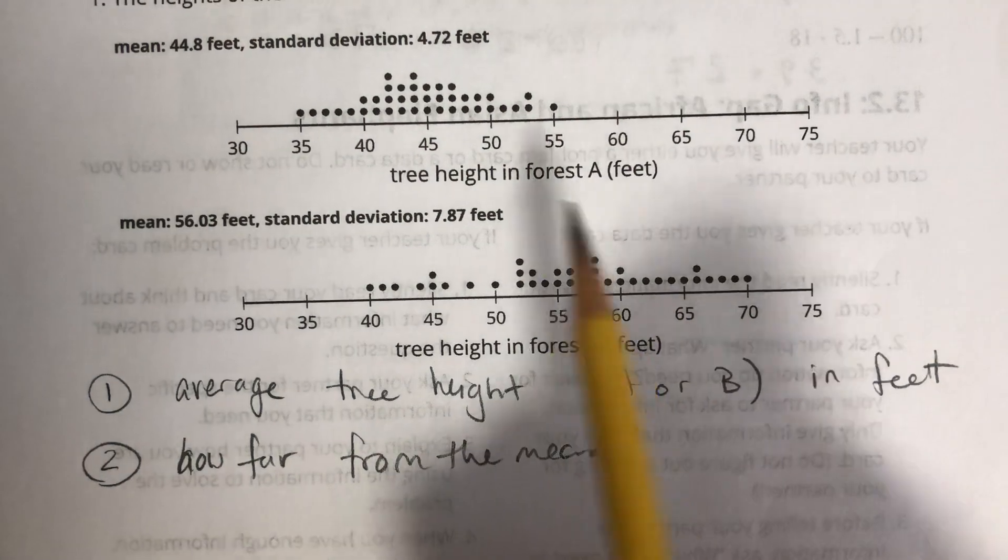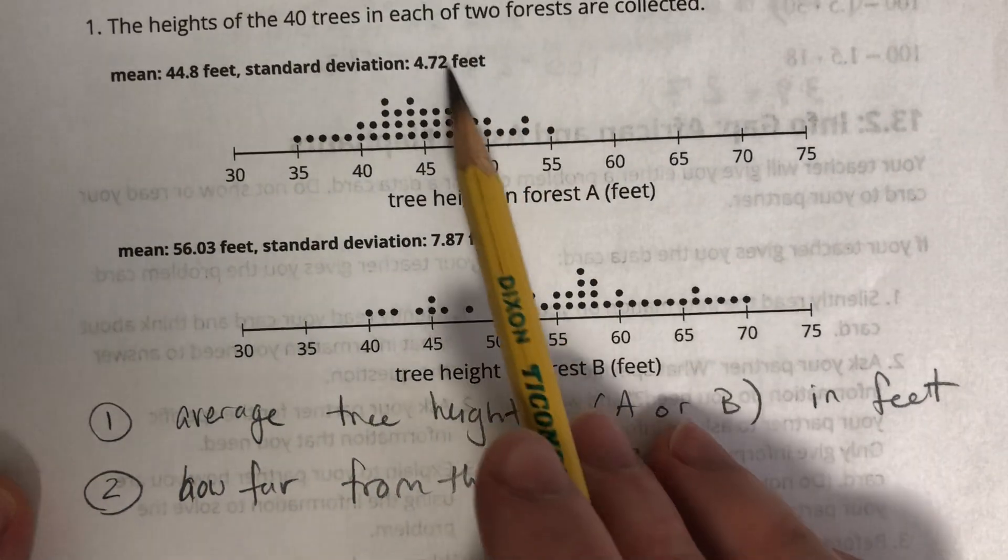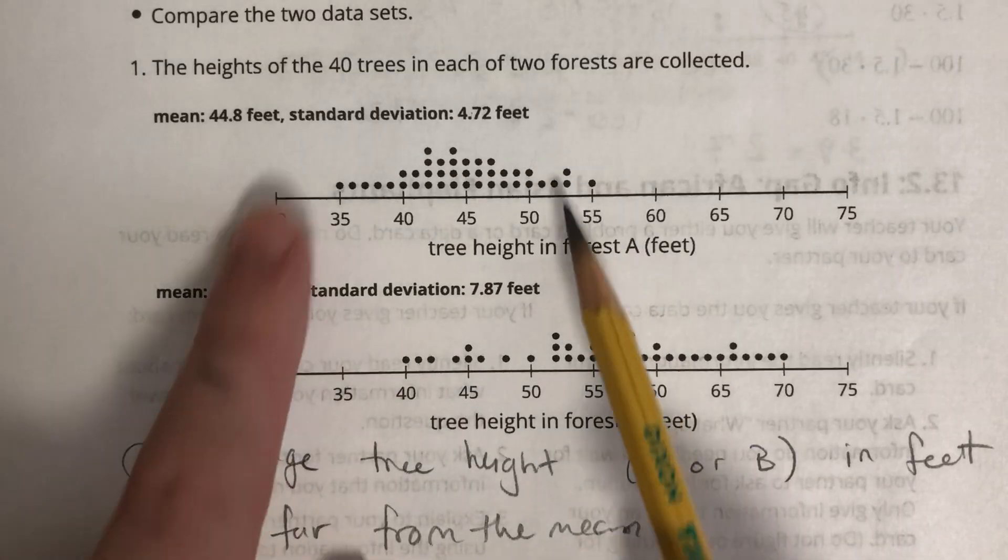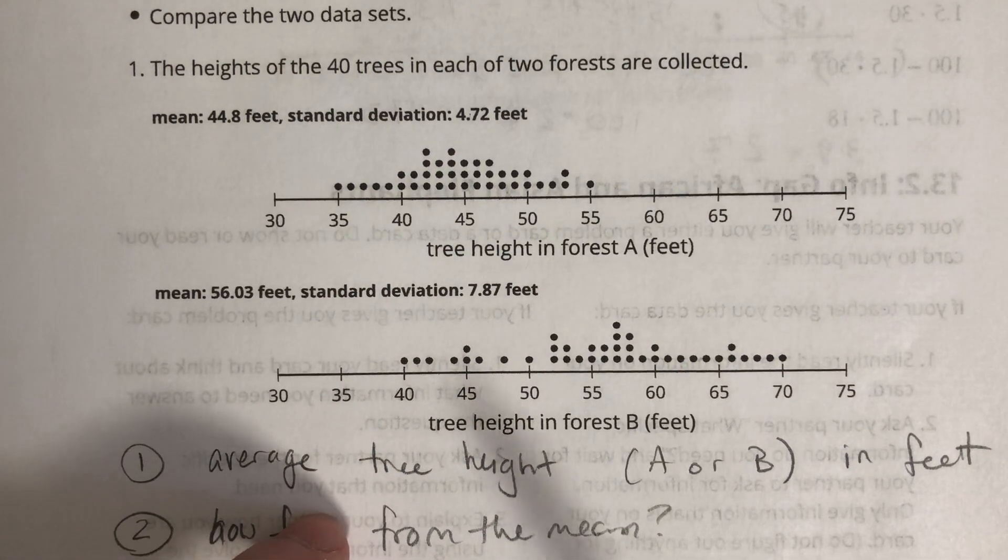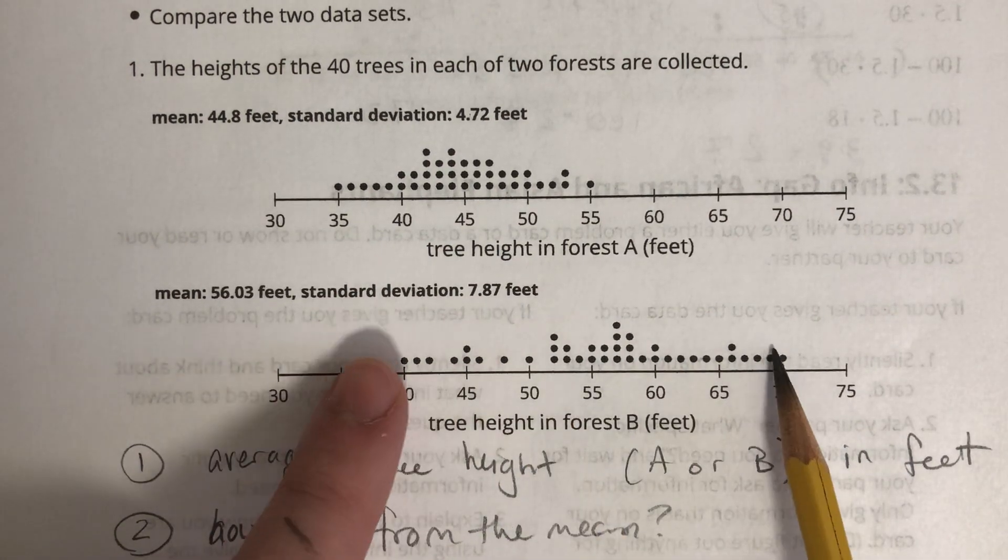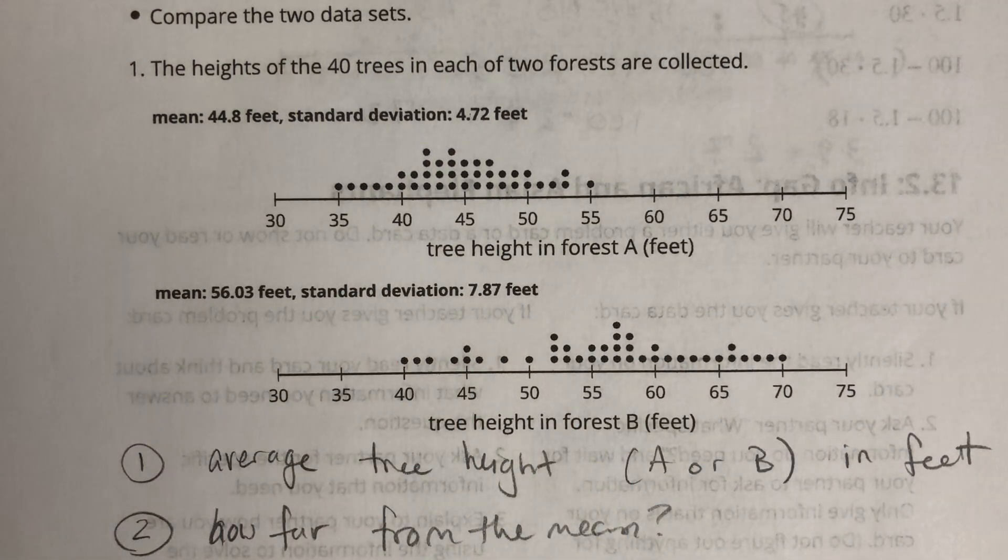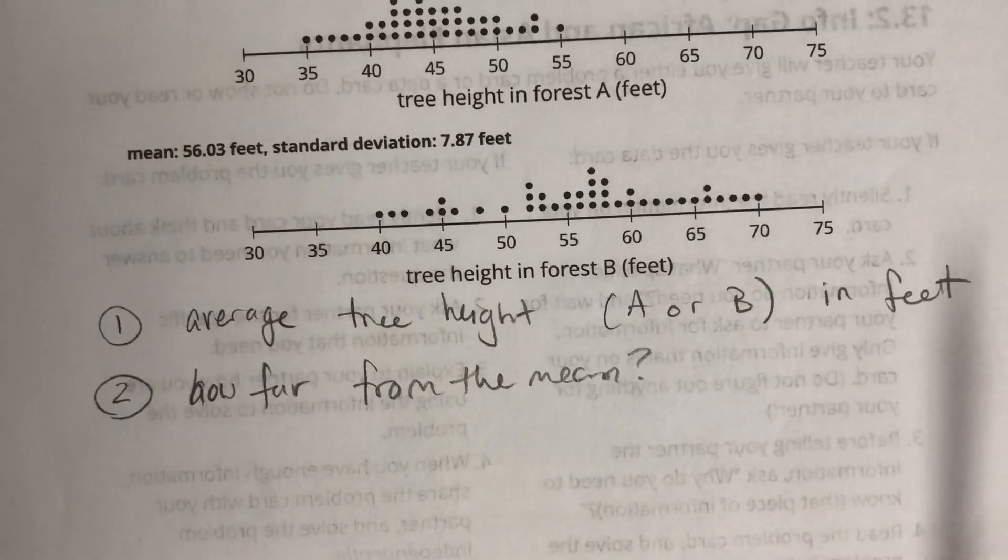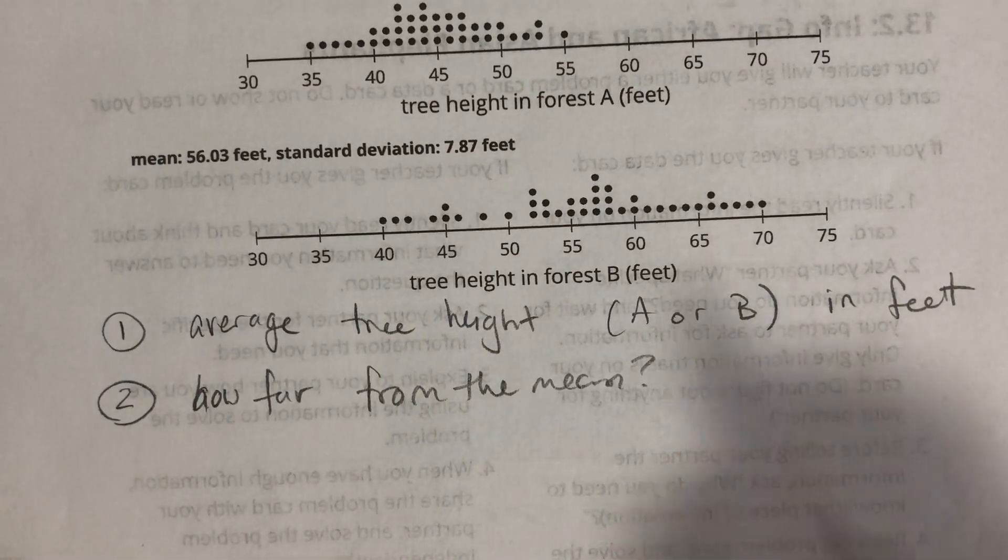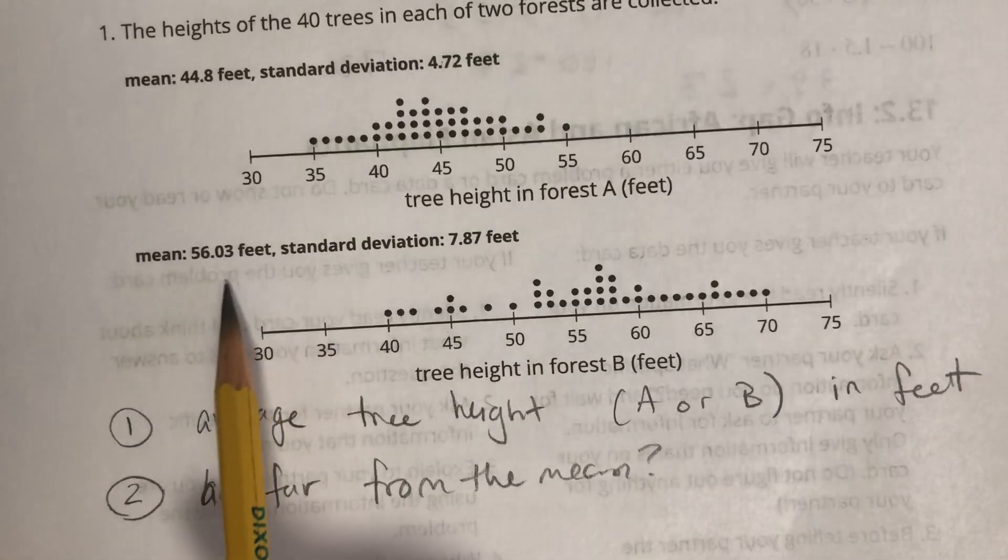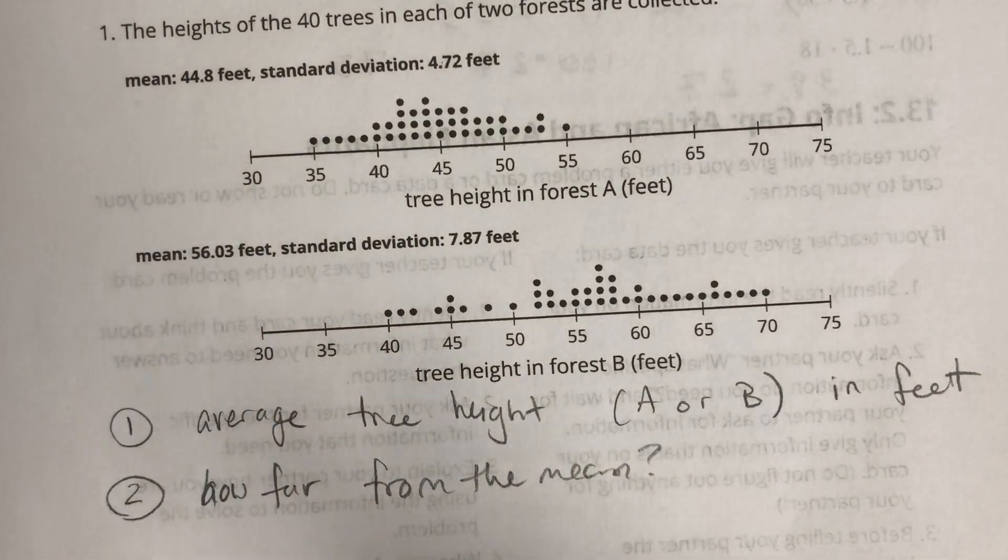Yeah, so I mean we can see that because this is 4.72 feet, you know, we have more compact data and here we got 7.87, it's a little bit more spread out. So compare the two data sets. If we have a mean of 56 here and then a mean of 44.8 here.